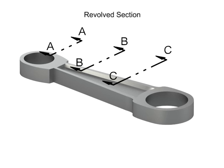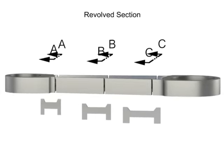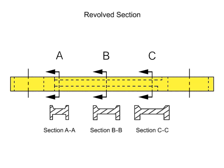Removed sections are actually revolved sections that are moved to another location on the drawing. Removed sections are used when a part, such as this connecting rod, changes in cross section from one point to another.